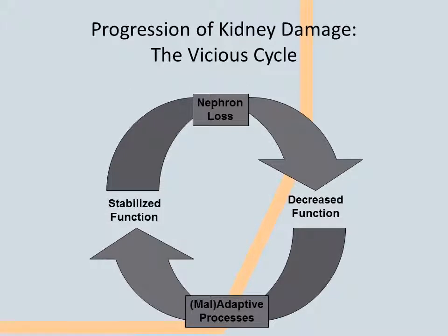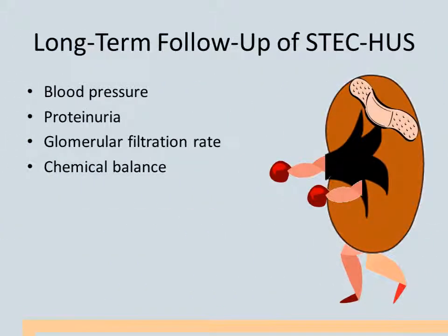Normal living causes loss of nephrons — up to 10% may be completely scarred by 40 years of age. Episodes of acute kidney injury such as HUS cause more dramatic loss of nephrons, leading compensatory processes to kick in. These processes may stabilize overall kidney function, but they ultimately result in more nephron loss. This vicious cycle continues until the kidney reaches permanent failure. All children with STEC-HUS require attention to indicators of chronic kidney disease for the rest of their lives.